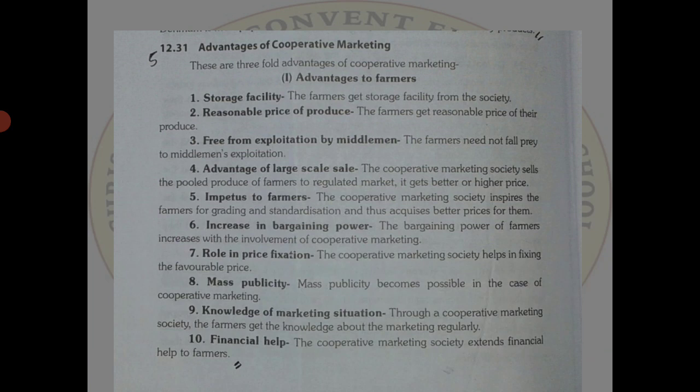Further advantages include a role in price fixation to attain favorable prices, and mass publicity which becomes possible through cooperative marketing. Peasants can know the marketing situation — at what time prices are high and at what time they are lower — and understand market trends. Moreover, if peasants are in need of money, the marketing society can provide finance by keeping their produce in godowns, giving them financial assistance.